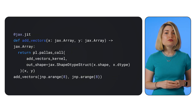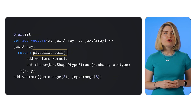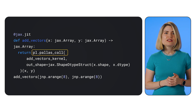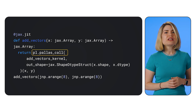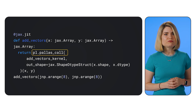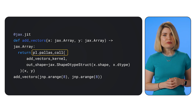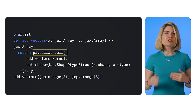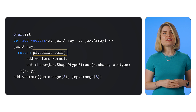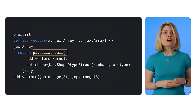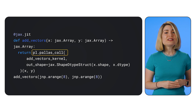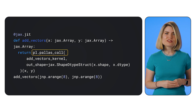To actually use this kernel, we need to wrap it with Pallas call. This takes the kernel function, the output shape, the data type, and some other optional arguments we'll discuss later. Finally, we can call our add vectors function just like any other JAX function.